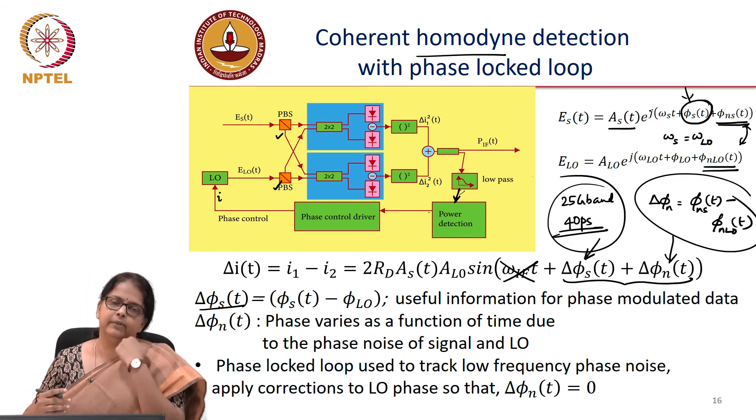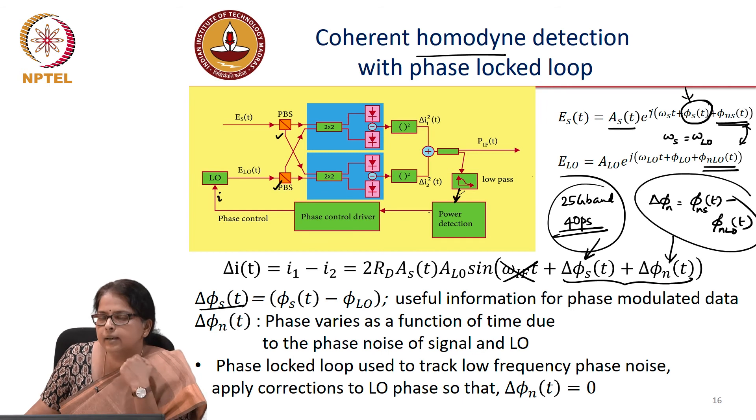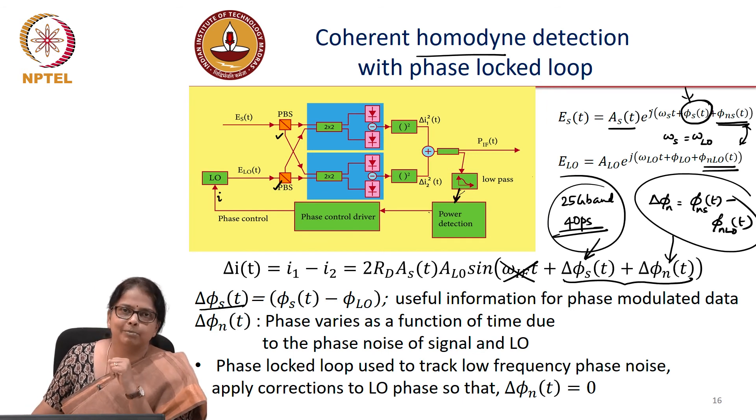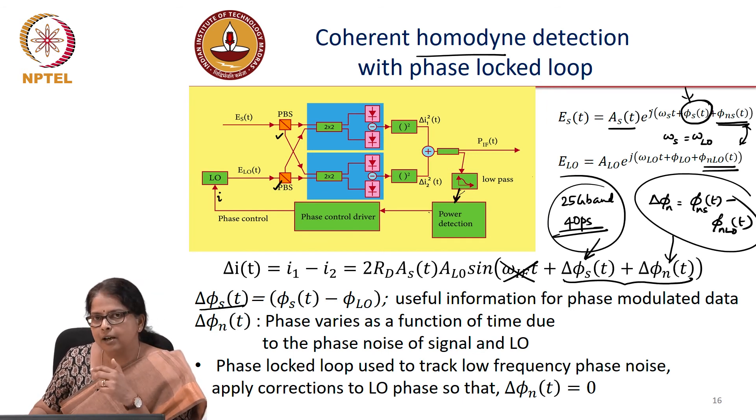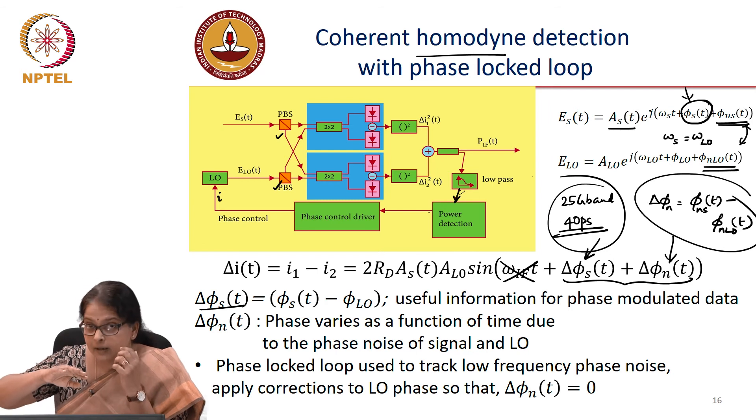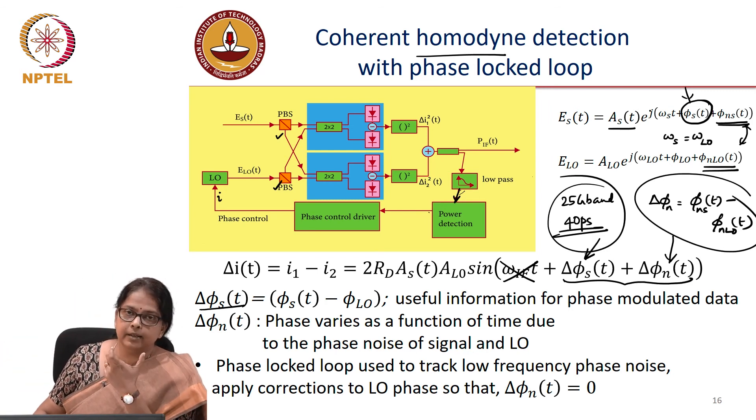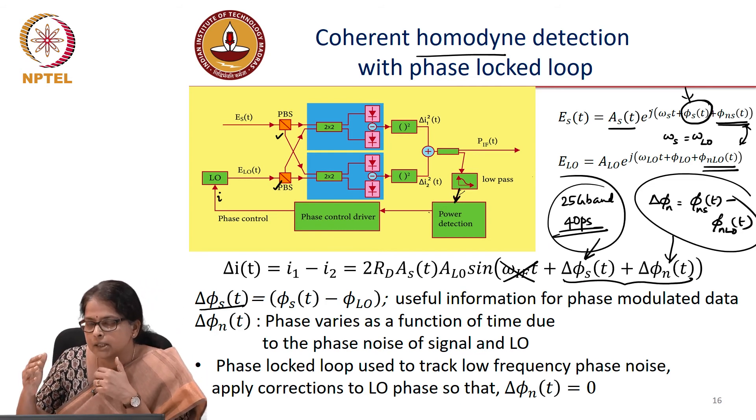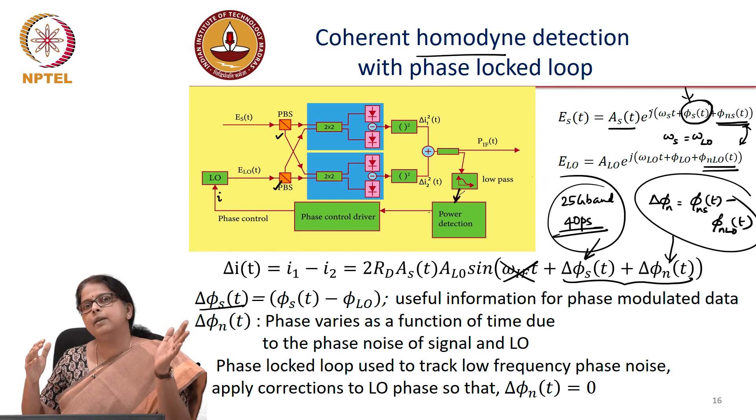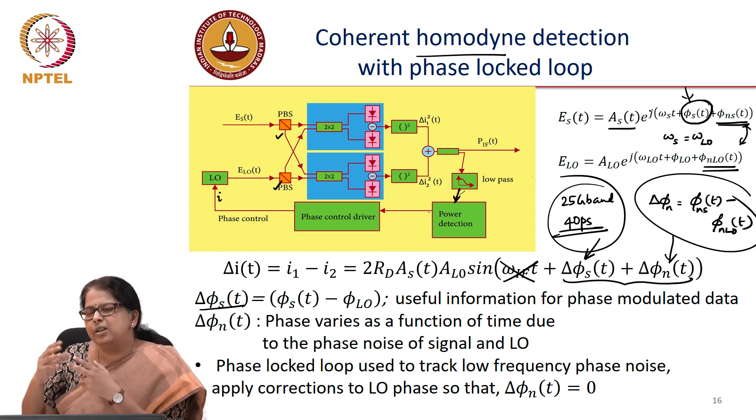This is happening at 25 gigabyte 40 picoseconds. What are the time scales at which this delta phi n is evolving? This evolves at the time scale of the line width of the laser. And we know, let us say the line width of the laser is 100 kilohertz. We have done this calculation before. We have actually calculated how many symbols after which the signal starts getting distorted because of the phase noise of the laser. And we figure that that change, the phase noise of the laser because of its random walk process is actually very slow.